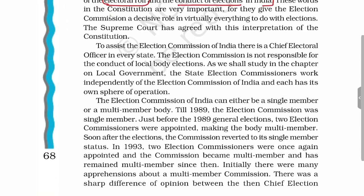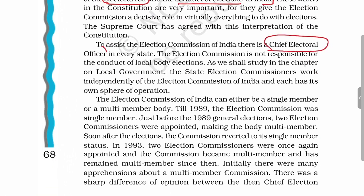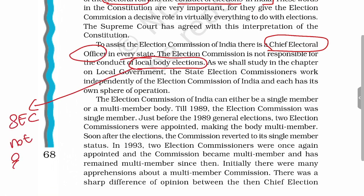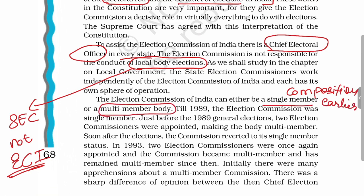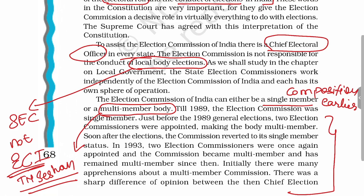To assist the Election Commission of India, there are Chief Electoral Officers at the state level. One important point: local body elections are conducted by the State Election Commission, not by the ECI. Regarding composition, earlier the Election Commission was a single-member body, but after the controversy during T.N. Seshan's tenure it became a multi-member body. Students are encouraged to read about T.N. Seshan, as it was because of his tenure that the Election Commission became multi-member.